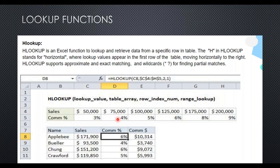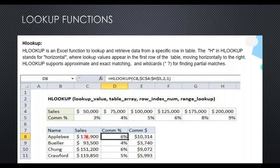I write HLOOKUP — horizontal lookup — looking for the value C8 (which is 171,900) in the range C4 to H5. I have frozen the range using dollar signs — dollar C dollar 4 to dollar H dollar 5 — so the table selection doesn't move if I drag the formula down. This is the whole two-row table range. Once 171,900 is found, I move positions downward — keeping the sales row as position one, I move to the second position.